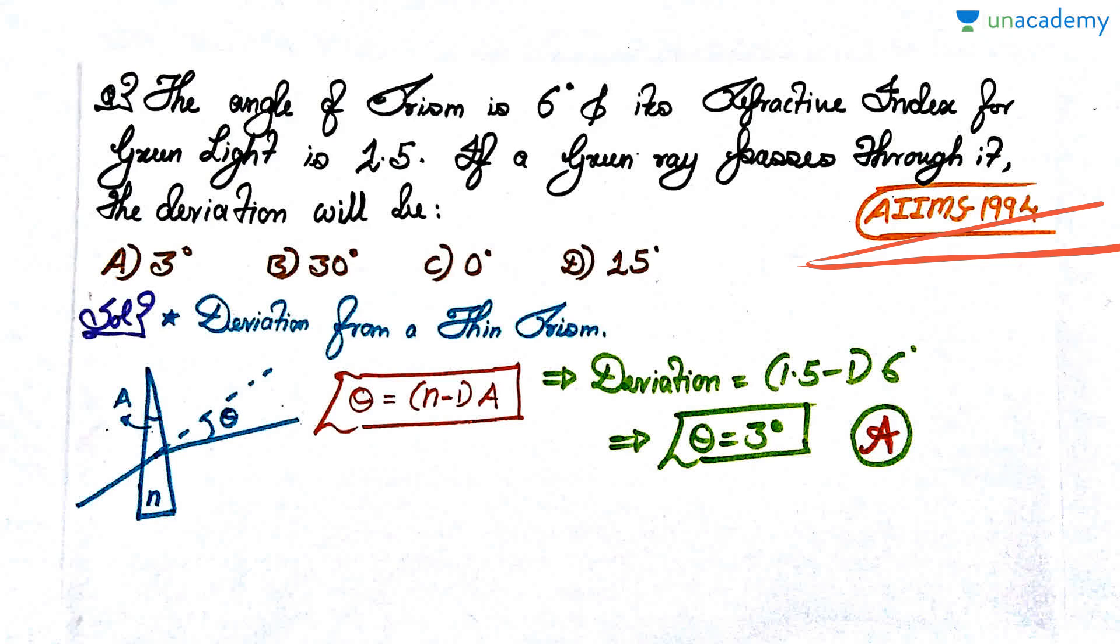It's a very simple question. Remember these questions from AIIMS are very simple, so they may not be asked in AIIMS but similar questions are very likely in the NEET examination of today. The only concept you need to know is deviation from a thin prism. Suppose a light ray is going like this and it deviates by angle theta.